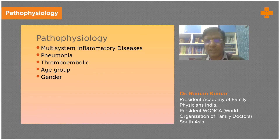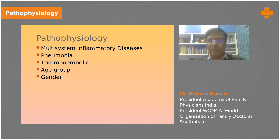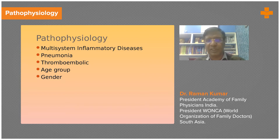These pneumonias are not infective pneumonias like normal viral pneumonias — they are inflammatory pneumonias. There is cellular-level inflammation, and as an outcome the lung alveoli are not able to filter gases. Hypoxia happens and oxygen falls dramatically, and this is a very fast phenomenon.